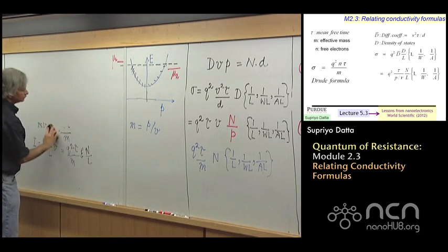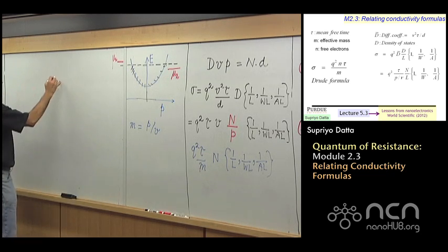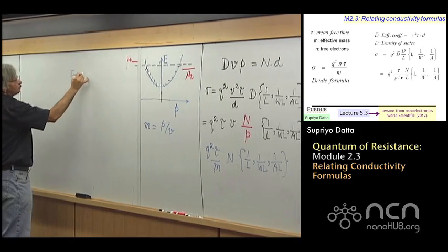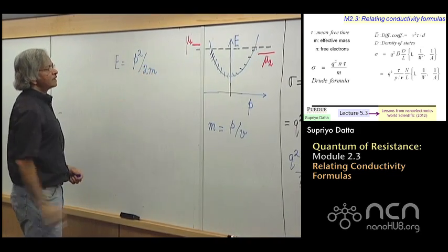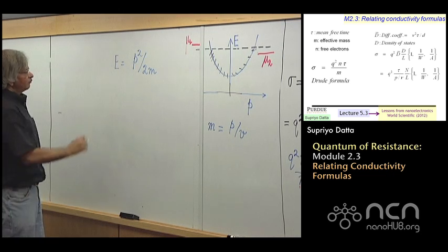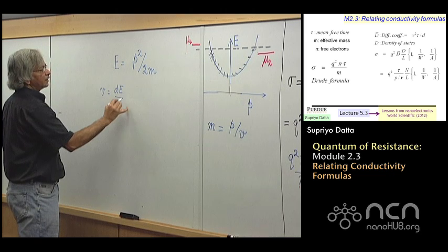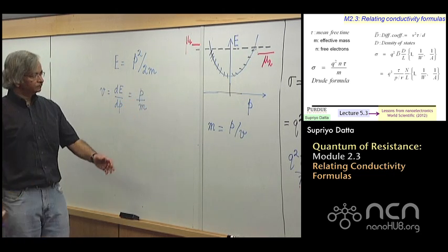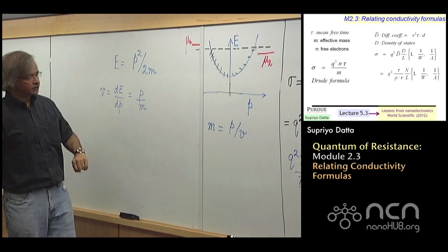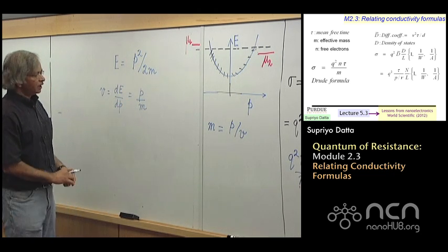So when you have e equals p squared divided by 2m, then velocity is, in general, dE dp. This is just a constant number, v0. So this is, in general, dE dp, and that's equal to p over m. And so, this looks fine. This is the one that we are used to.